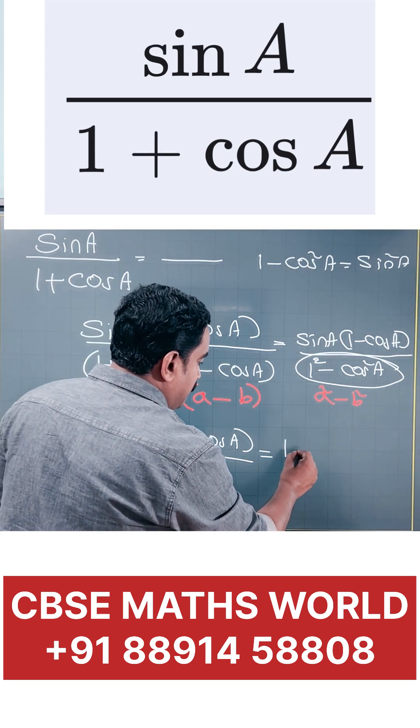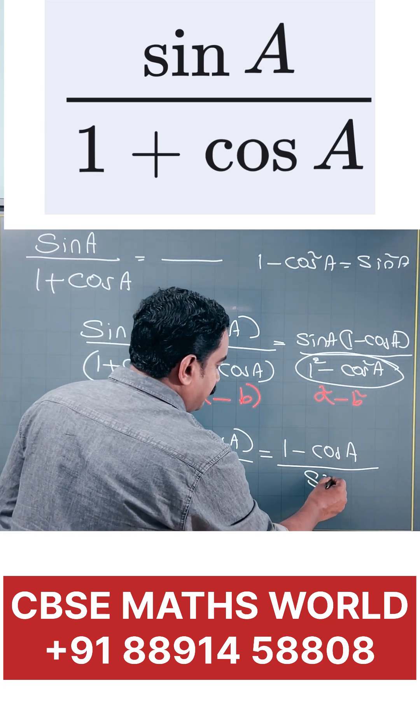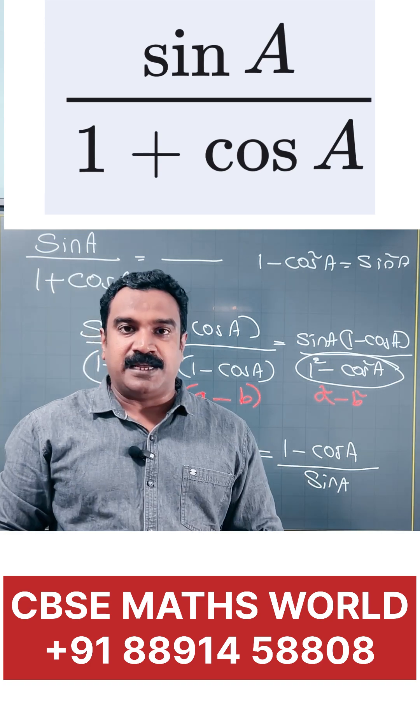What is remaining? 1 minus cos A, this is the numerator and the denominator is sine A. So, this is the final answer, 1 minus cos A numerator, denominator, sine A.